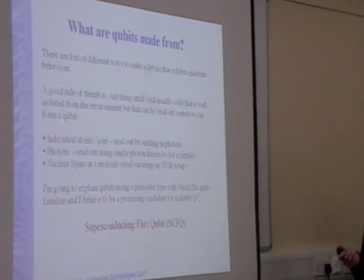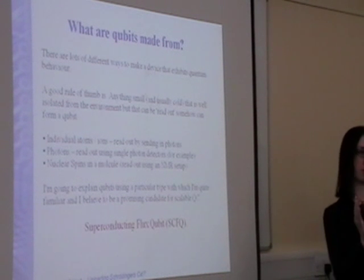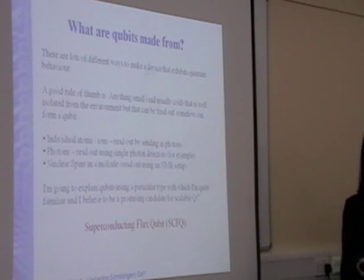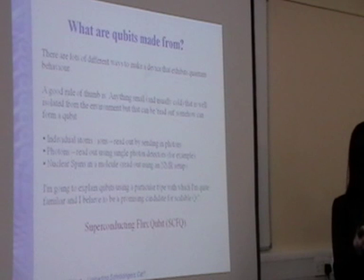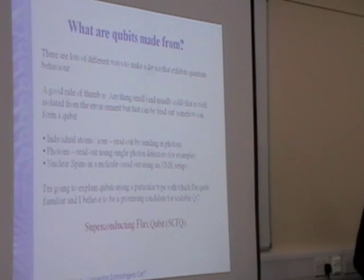You can use photons themselves to represent bits of information by, for example, passing them through a polarizing filter. You can have a horizontally polarized one and a vertically polarized one, representing two bits of information. Then these can be entangled and put into superpositions for a quantum system.